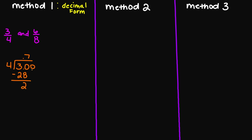I'm going to bring my zero down. Four goes into 20 now five times. Four times five is 20. 20 minus 20 is going to equal zero. So my first fraction here equals 0.75.